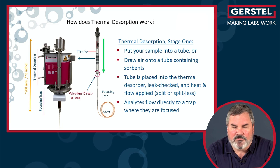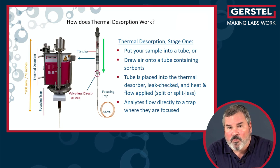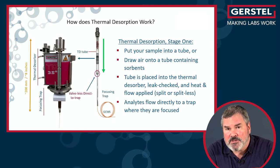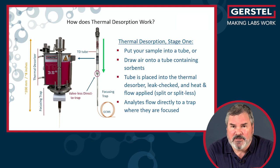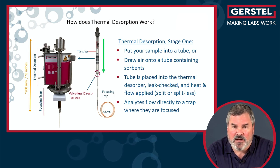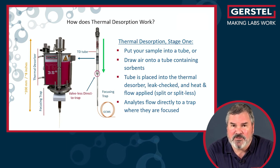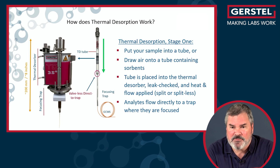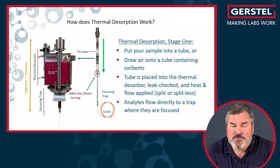So analytes are focused on the trap. But why use a focusing trap? The desorption flow is typically 50 to 100 mL per minute, while the column flow is usually 1 mL per minute. So we've got to make some kind of adjustment to handle this mismatch in flows, and this is how we do it.